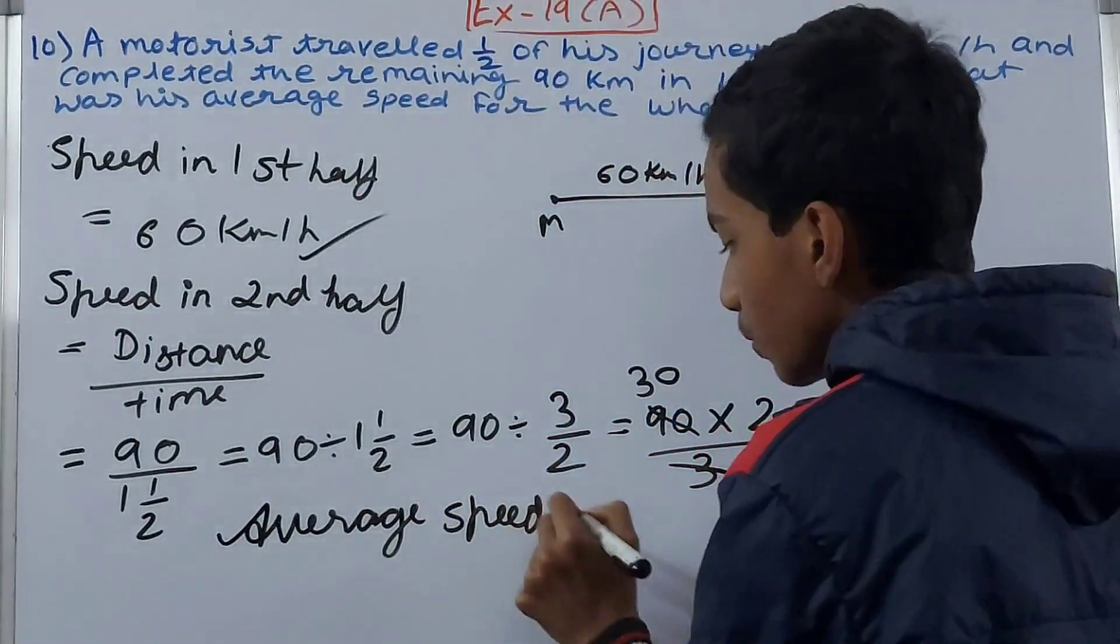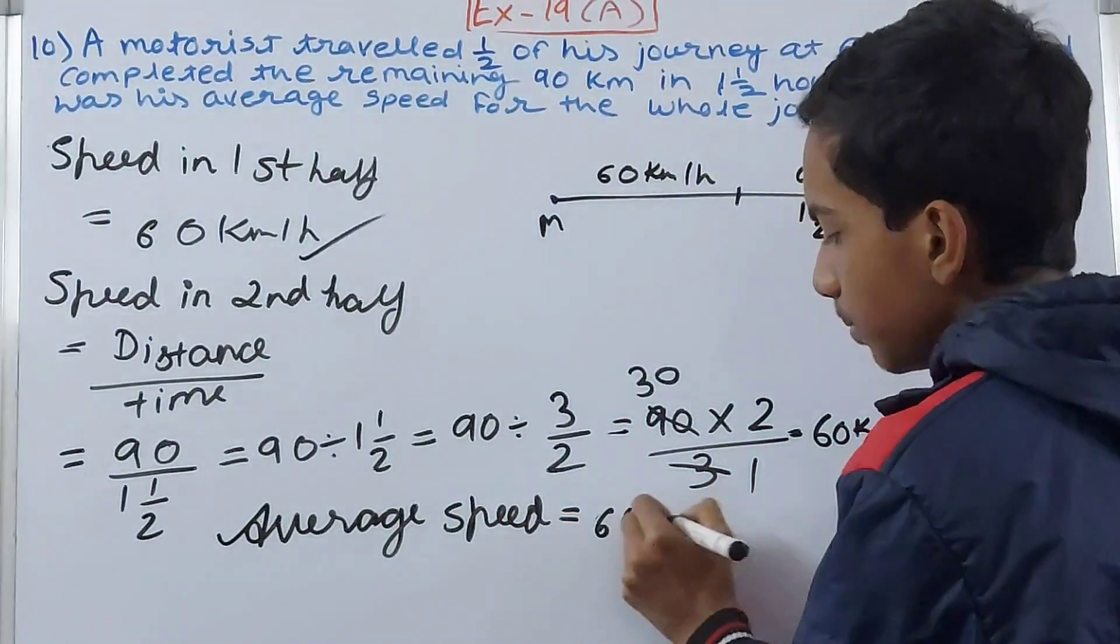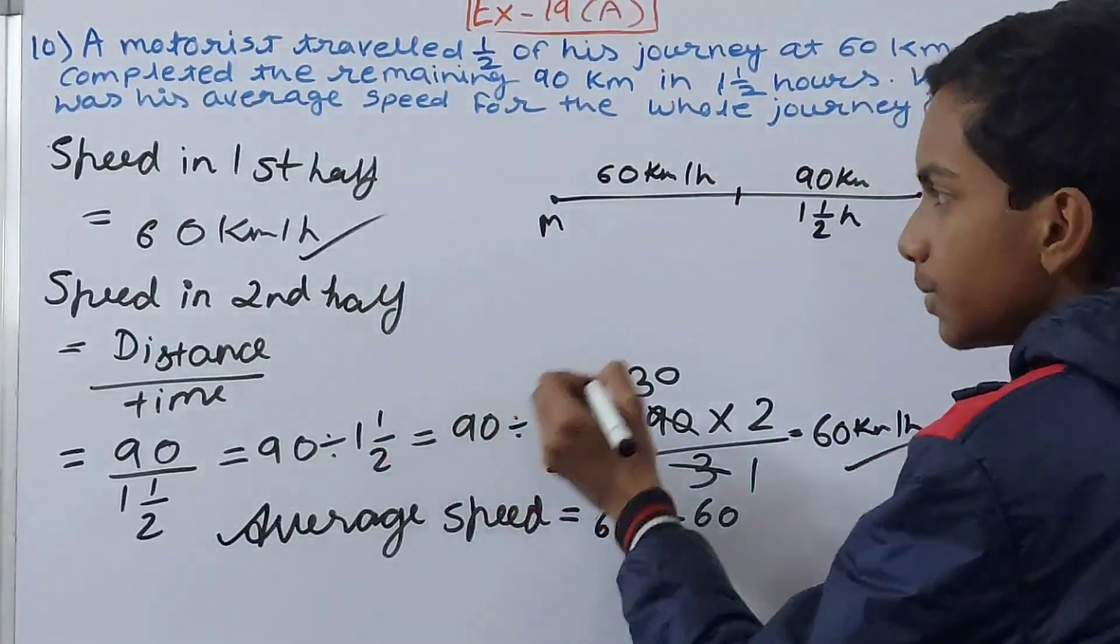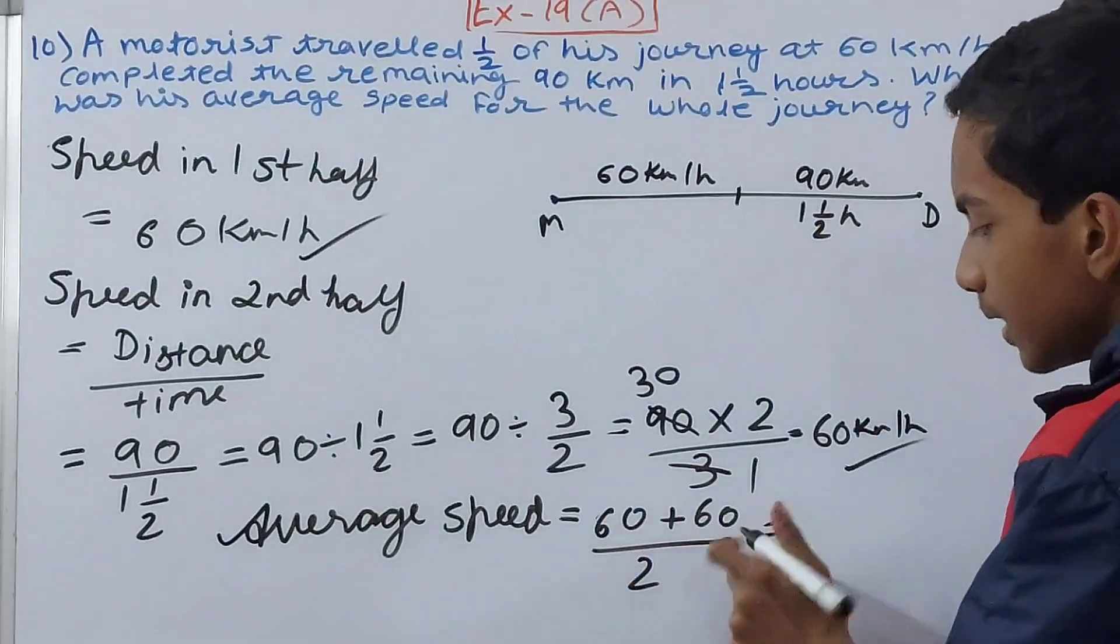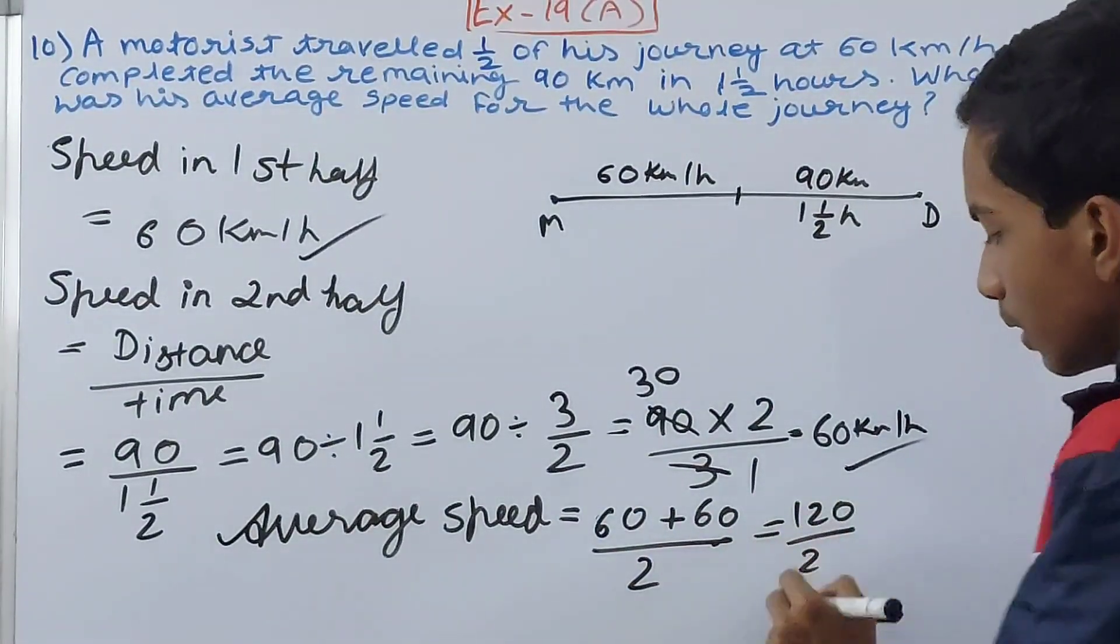Average speed - that is 60 plus 60, the speed in both halves, upon 2. Two different speeds are here, so 120 by 2.